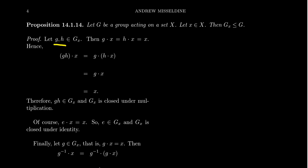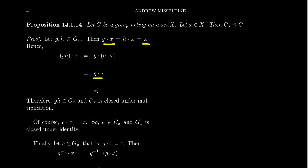Let's take two elements of the stabilizer, call them g and h. By assumption, g acting on x is x, and likewise h acting on x gives x as well — that's what it means to be in the stabilizer. So what happens when we take the product? Because this is a group action, g·h acting on x is the same as h acting on x and then g acting on that. By assumption h stabilizes x, so h dot x is just x. And g acting on x is just x. Therefore the product gh also stabilizes x, so gh is inside the stabilizer. G sub x is closed under multiplication.